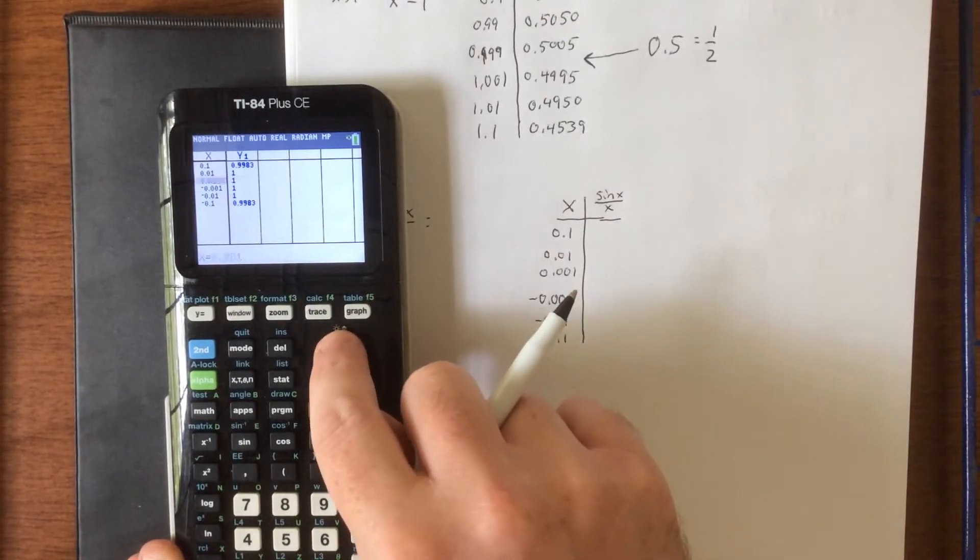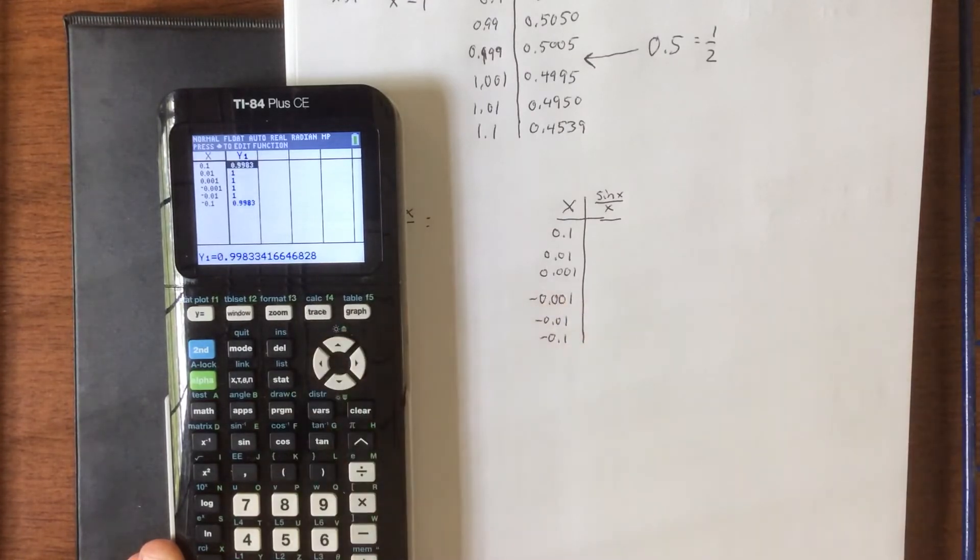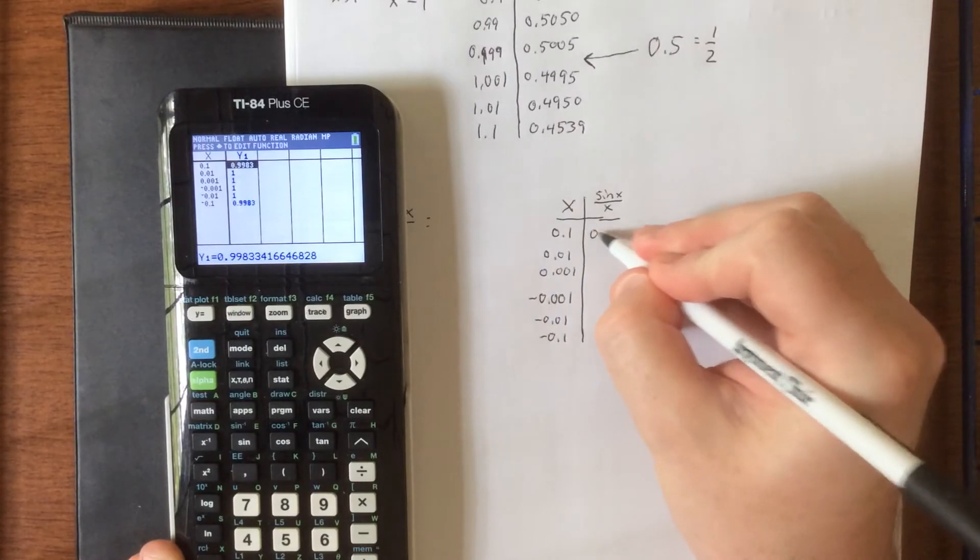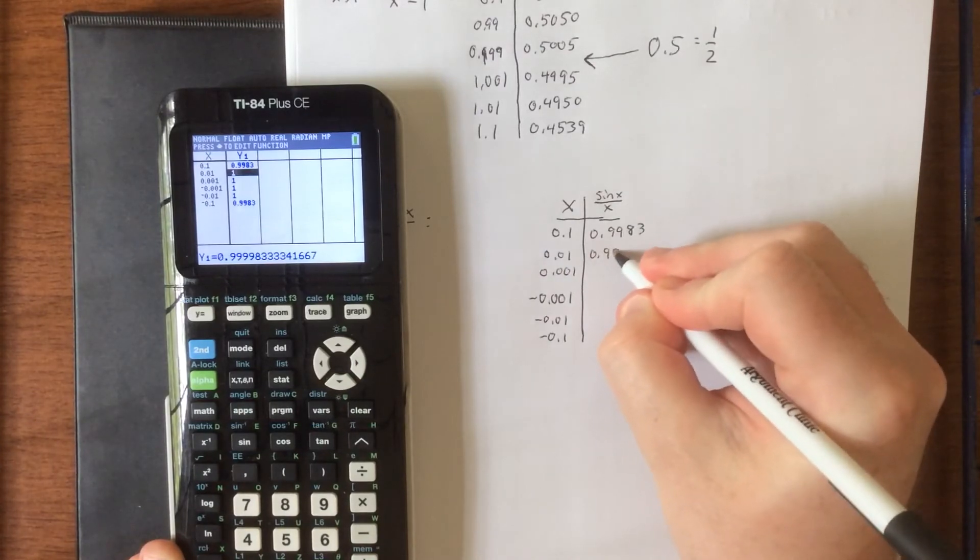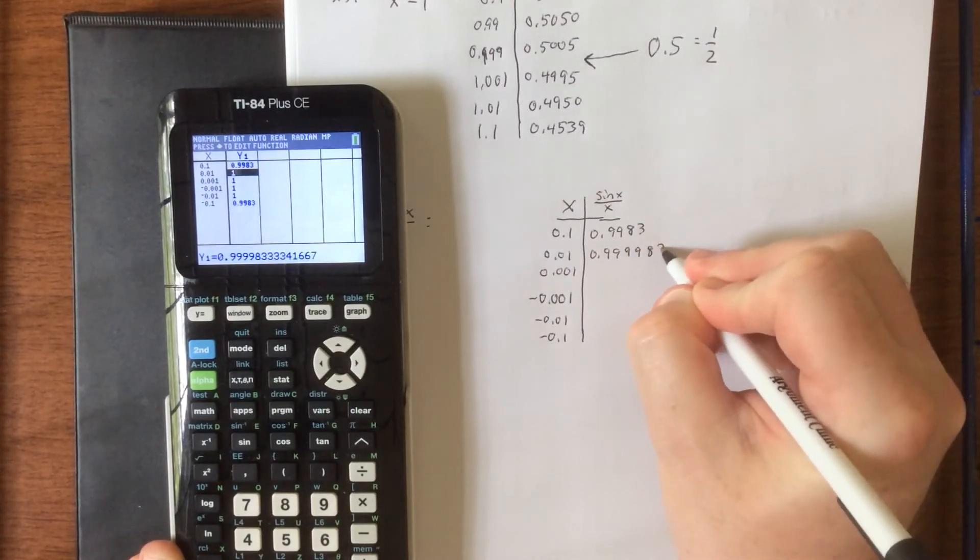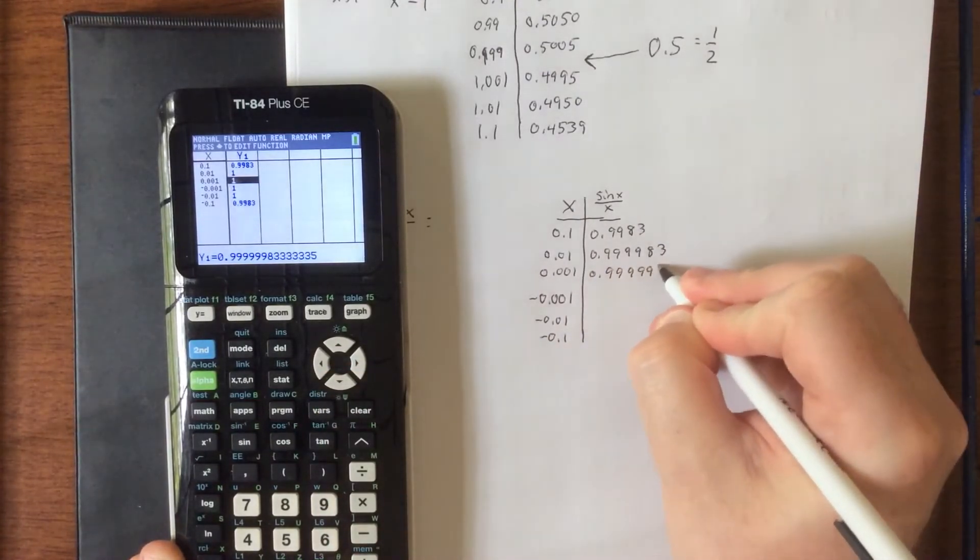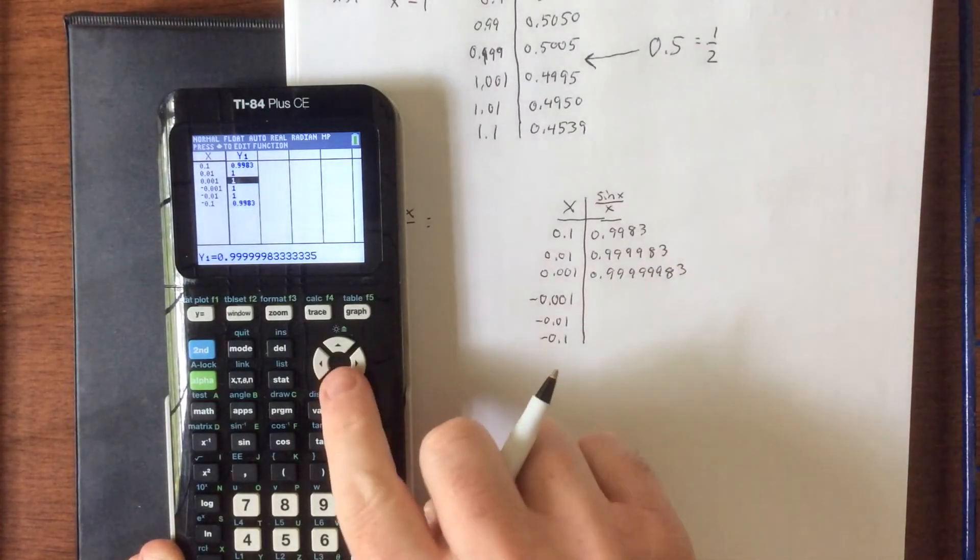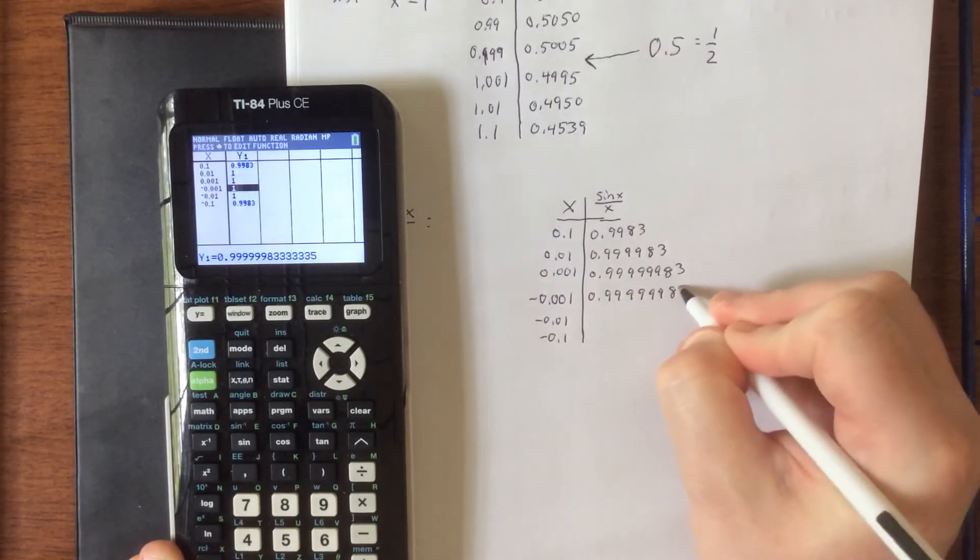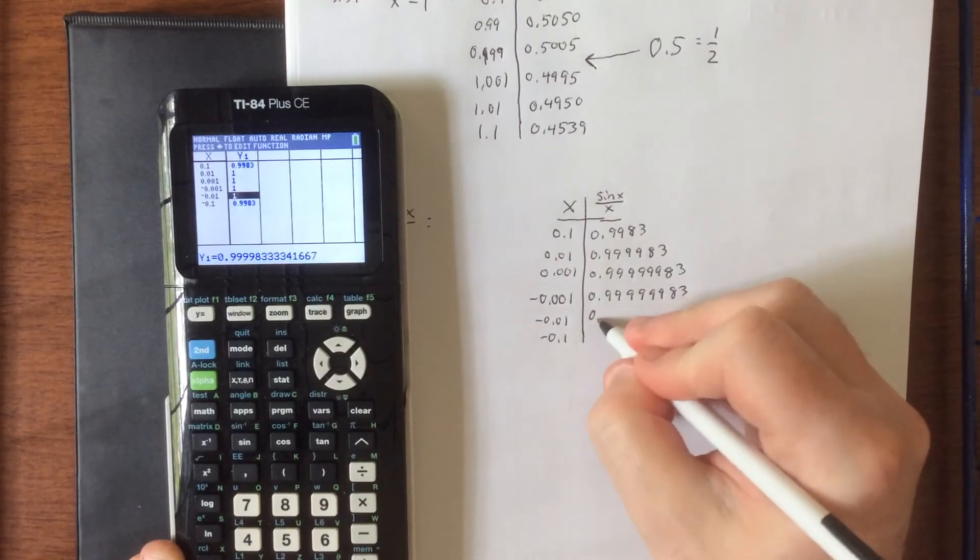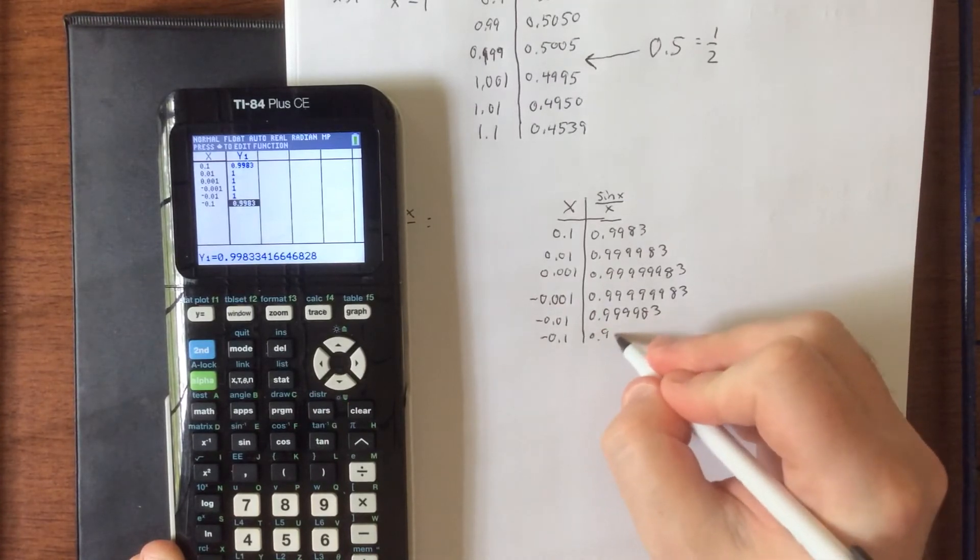Now you'll notice here that I'm getting some pretty consistent results as far as rounding to the fourth decimal place is concerned. So we're going to hold on to a couple of extra decimal places on this one. 0.9983, 0.999983, 0.99999983. Good stuff. Same number on the other side. 0.99999983, 0.999983, and 0.9983.